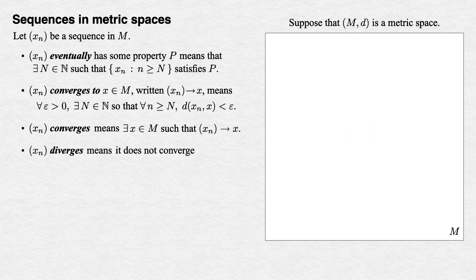It diverges if it does not converge. Specifically, for all x in M, (x_n) does not converge to x.